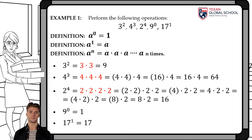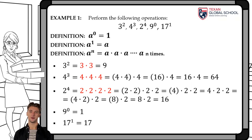2 raised to the fourth power can be expressed as 2 times 2 times 2 times 2. We associate factors 2 by 2, resulting in 16. In the fourth example, 9 raised to zero, by definition, is 1. Finally, 17 raised to the first power, by definition, is 17.